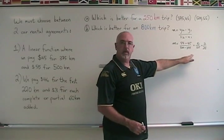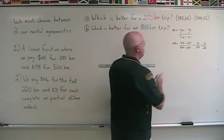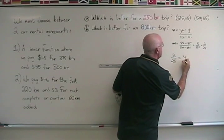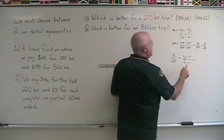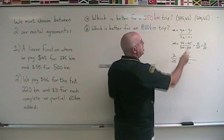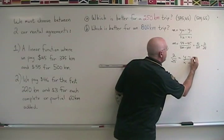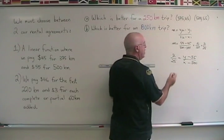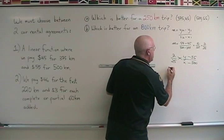Now we can use that slope to find the equation of the line. 2 over 25 is equal to y minus over x minus, and then I can plug in either of these points. I'm going to choose (500, 55).